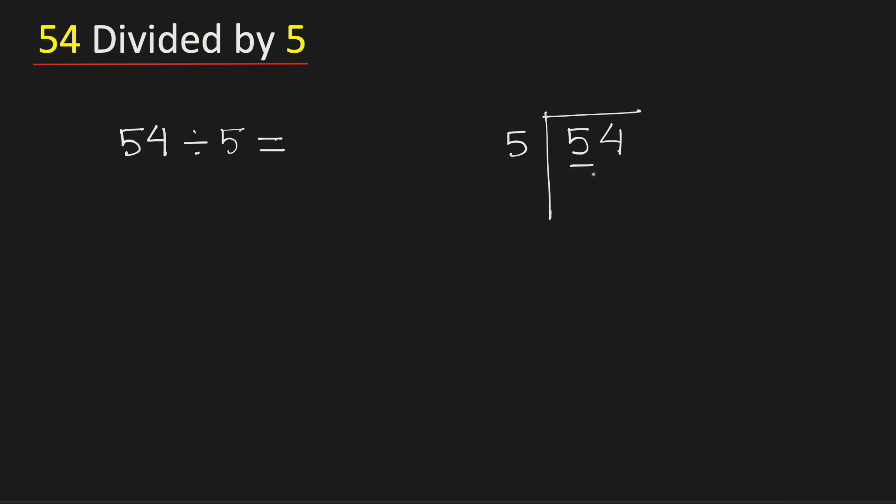Consider the first digit 5. We know that 5 times 1 is 5. Subtract, we get 0.